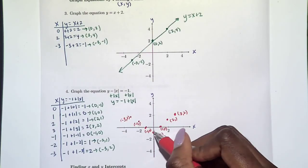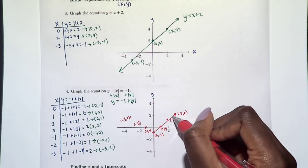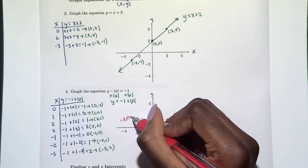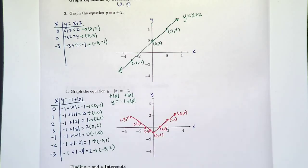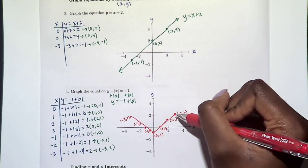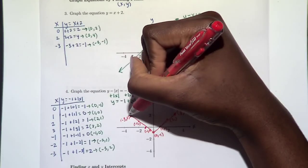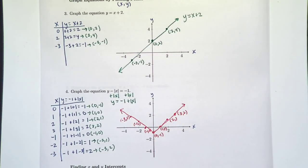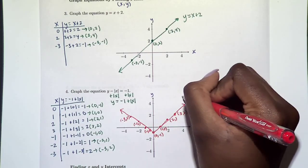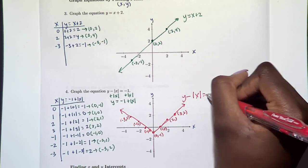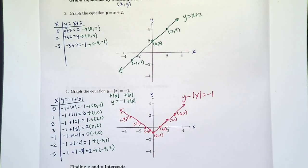Let's connect these points. It makes a little V-shape. We could have plugged in even more numbers, so this graph continues with arrows. This is the graph of the equation y minus the absolute value of x equals negative 1.